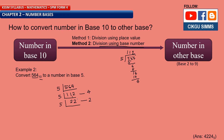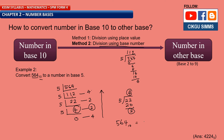Continue dividing 22 by 5: 5 times 4 is 20, so answer is 4 with remainder 2. Write 4 and remainder 2. Then divide 4 by 5: answer is 0 with remainder 4. When we get 0 we can stop. The final answer is read from the bottom to the top: 4, 2, 2, 4. So 564 base 10 equals 4224 base 5.